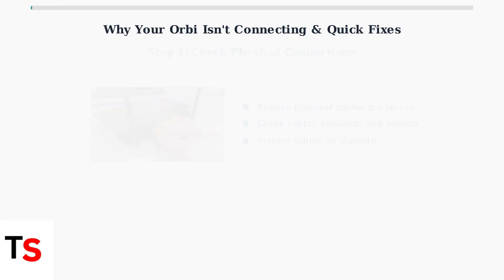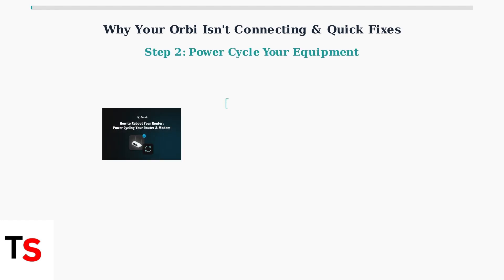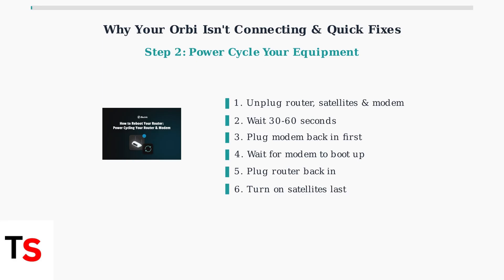Next, we'll perform a power cycle, which often resolves temporary glitches. Power cycle your equipment by unplugging the Orbi router, satellites, and modem. Wait 30-60 seconds, then plug the modem back in first and wait for it to boot up. Next, plug the Orbi router back in and finally turn on the satellites.